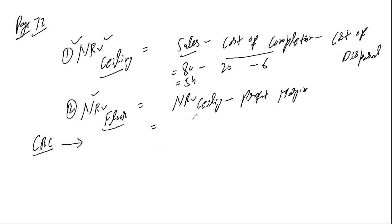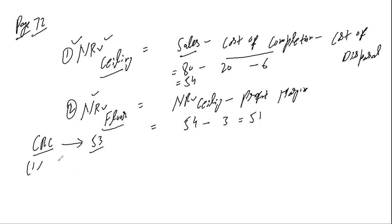For NRV floor: ceiling of 54 minus profit margin of 3 gives a floor of 51. So we have NRV ceiling = 54 and NRV floor = 51. For CRC, it is also given in the question. Now with these three values, we apply the first rule.